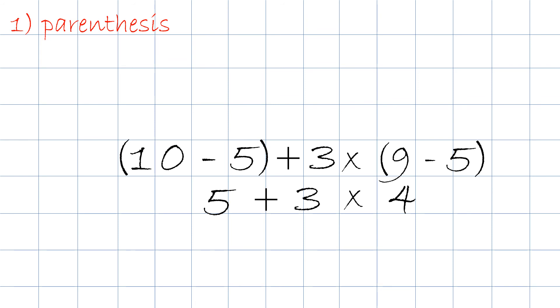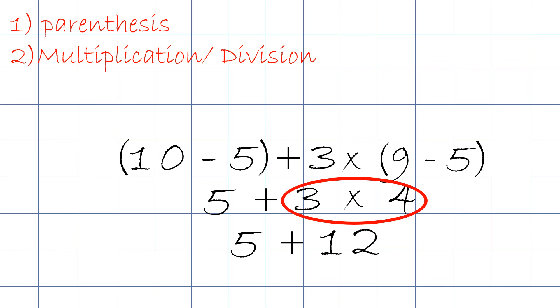Next thing we do is we do multiplication and division from left to right. So, we have 3 times 4. We know the answer is 12. We write it right here. Then we rewrite the sentence. 5 plus 12.